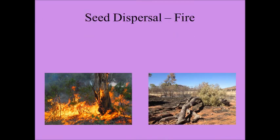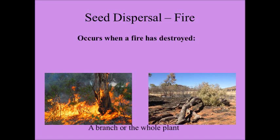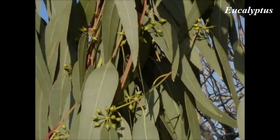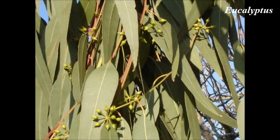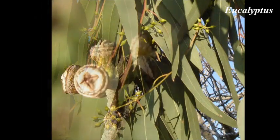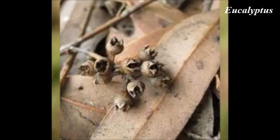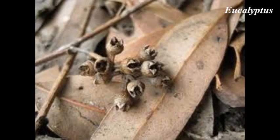Fire dispersed seeds occur when a fire has destroyed a branch or the whole plant. Seeds are stored within the plant until it is killed off. The ovary in the eucalyptus fruit has three or four valves. Once the fruit dries and matures, it splits open. Heat produced from the fire rapidly opens the valves of the fruit that are in the canopies of the tree and the seeds are dispersed.